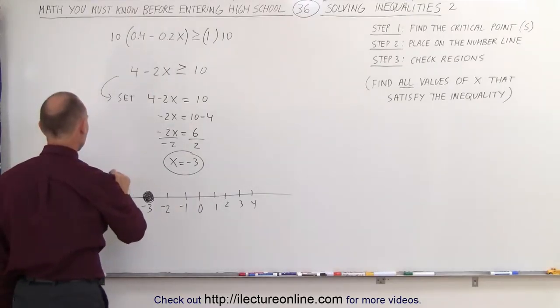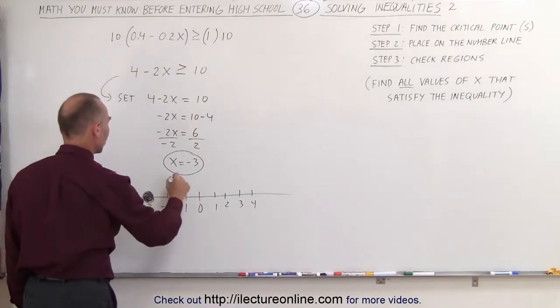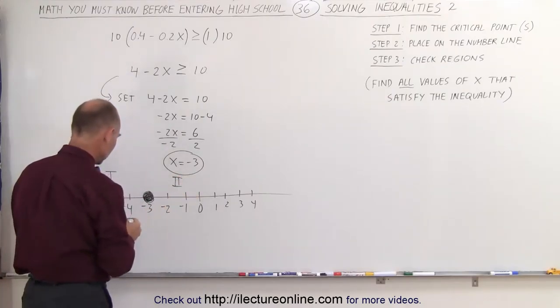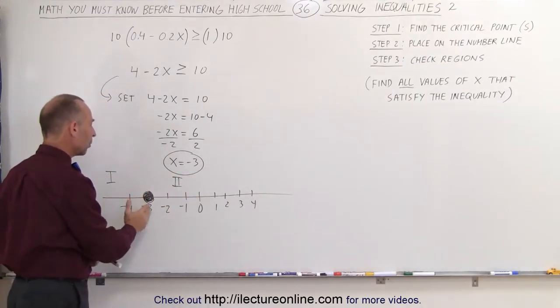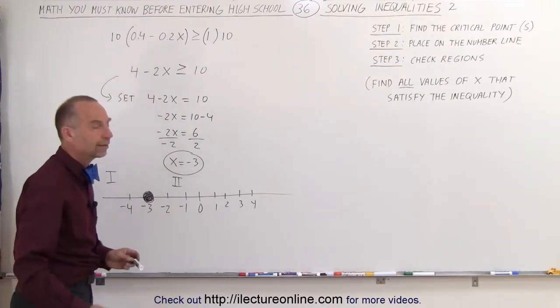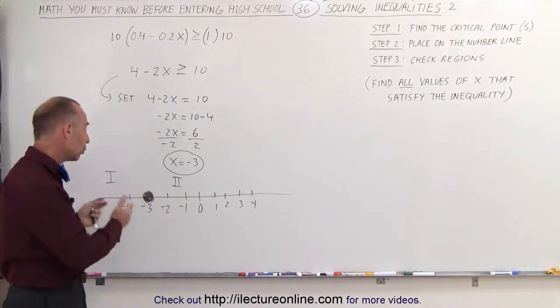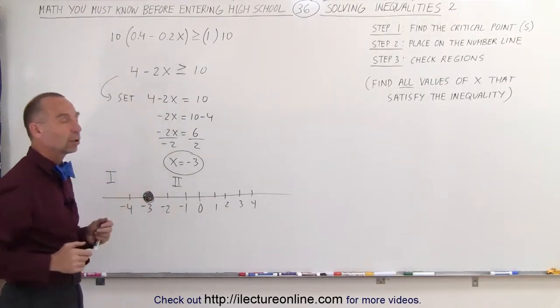That critical point divides the number line into two regions, region 1 and region 2. Region 1 is to the left of that point. Region 2 is to the right. Now we need to check which of the two regions satisfies the inequality.